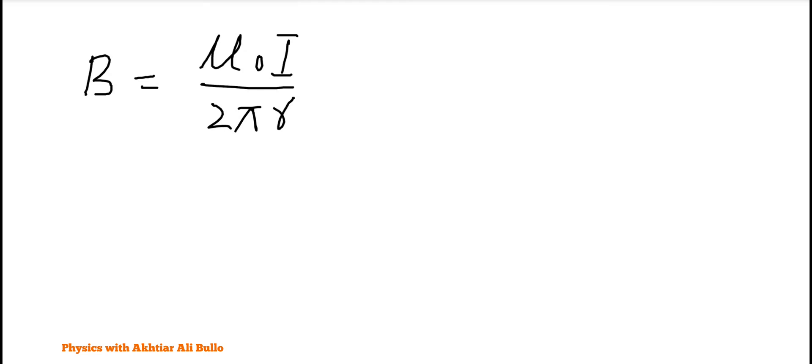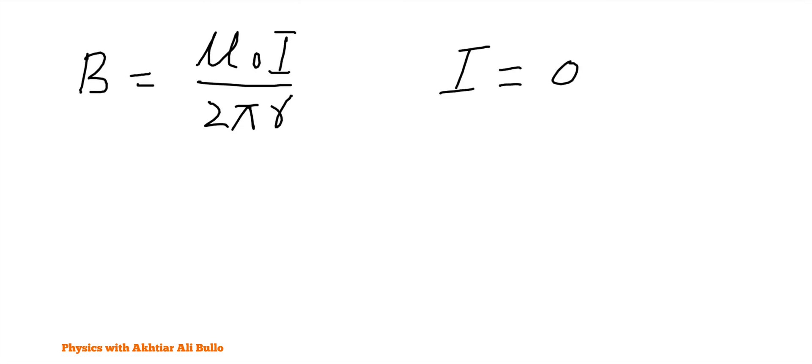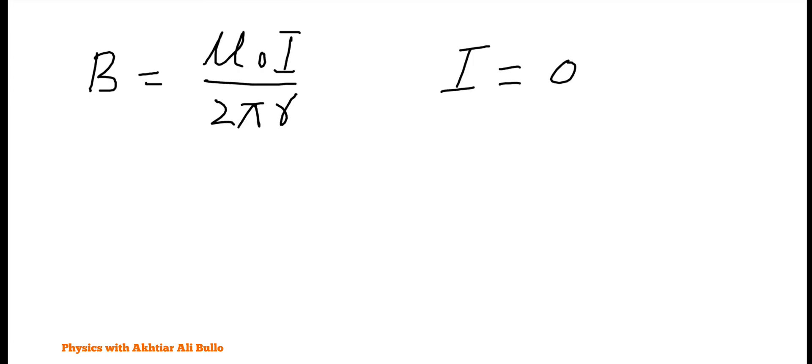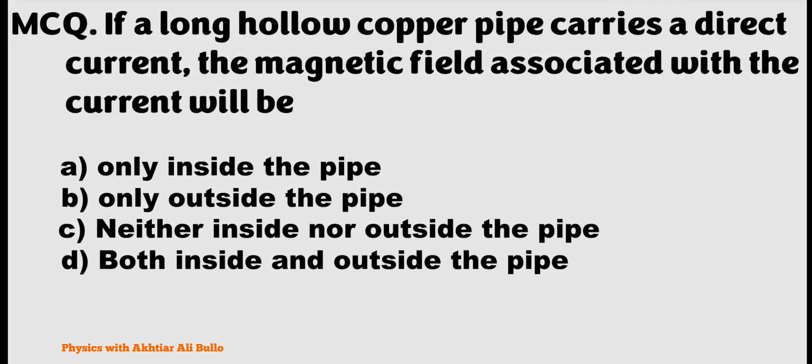As inside the pipe electric lines of force are absent, therefore electric current is zero. If current is zero, then magnetic field will also become zero. So inside the pipe, magnetic field of induction is zero.